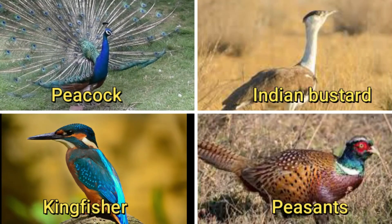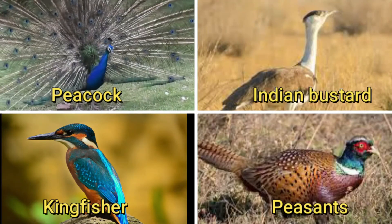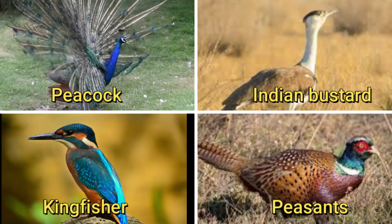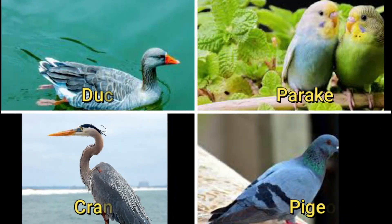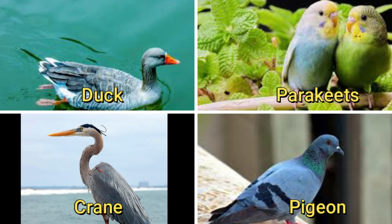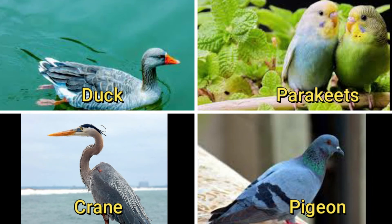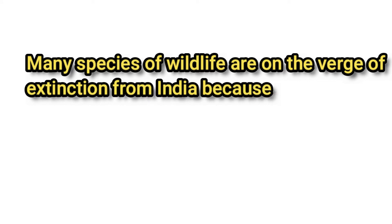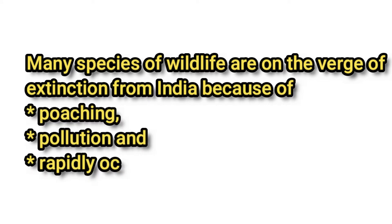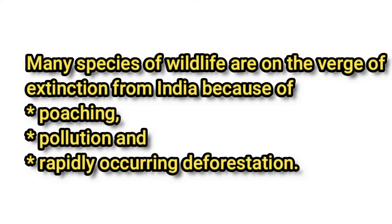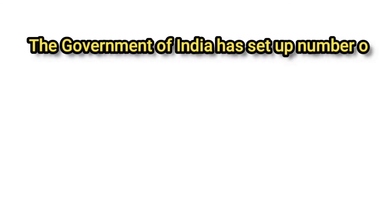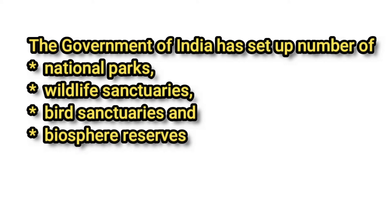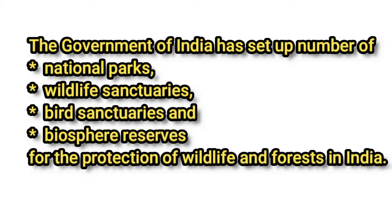Forests and wetlands are the shelters of a variety of birds like peacock, Indian bustards, kingfishers, pheasants, ducks, parakeets, cranes, and pigeons. All these species make India a land of unique wildlife habitat. But sadly, many species are on the verge of extinction due to poaching, pollution, and rapidly increasing deforestation. To save the wildlife, the government of India has set up many national parks, wildlife sanctuaries, bird sanctuaries, and biosphere reserves.